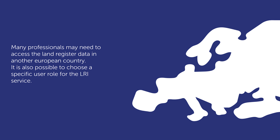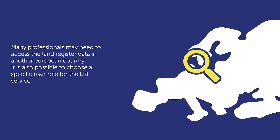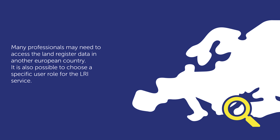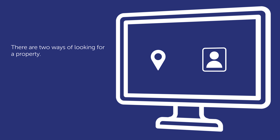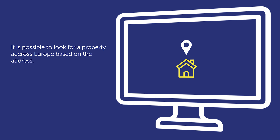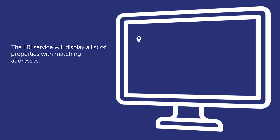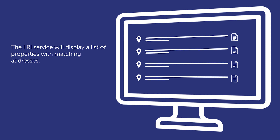It is also possible to choose a specific user role for the LRI Service. There are two ways of looking for a property. It is possible to look for a property across Europe based on the address. The LRI Service will display a list of properties with matching addresses.